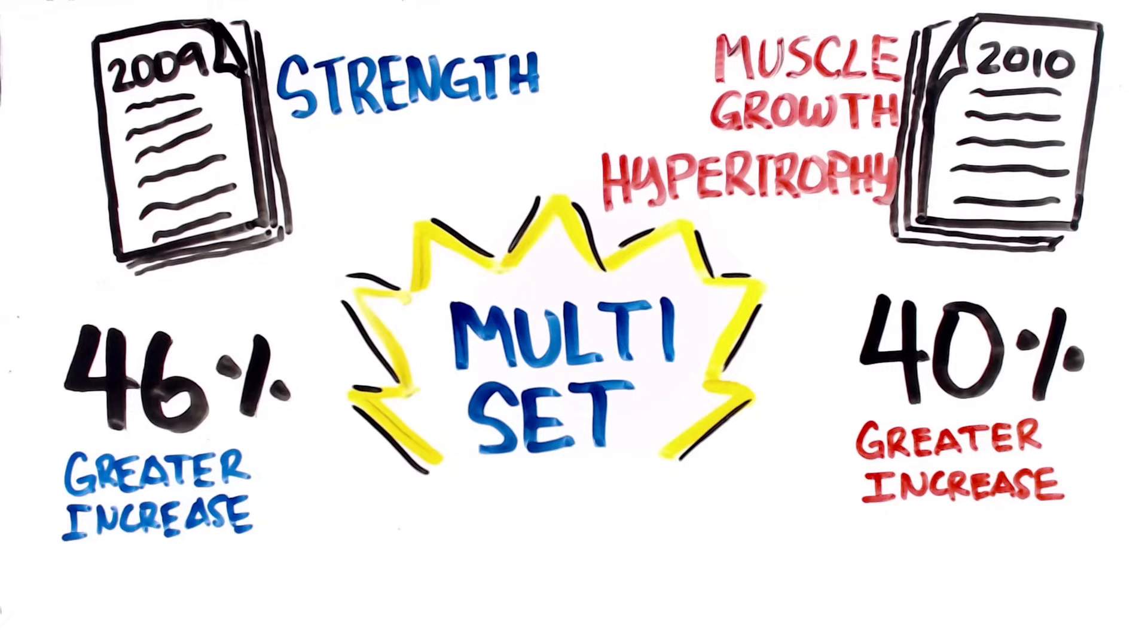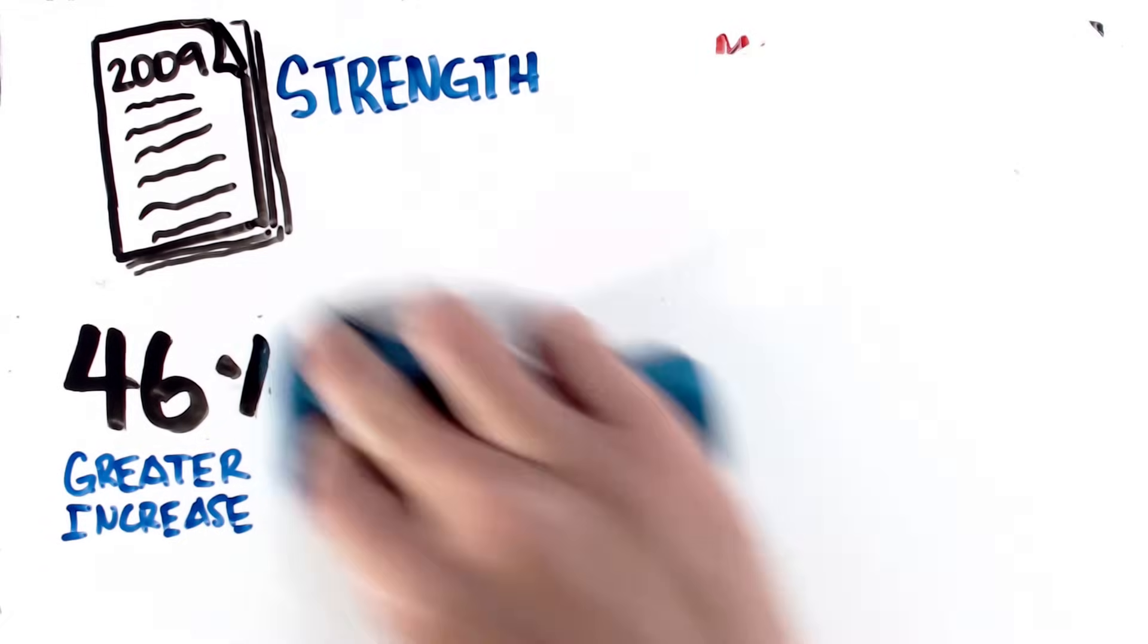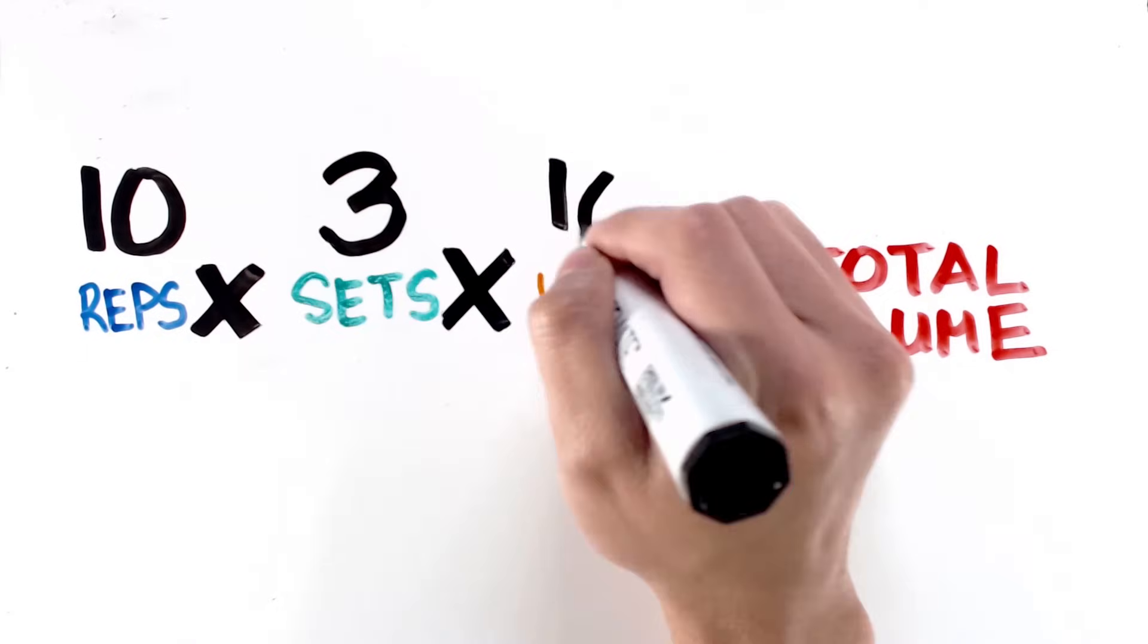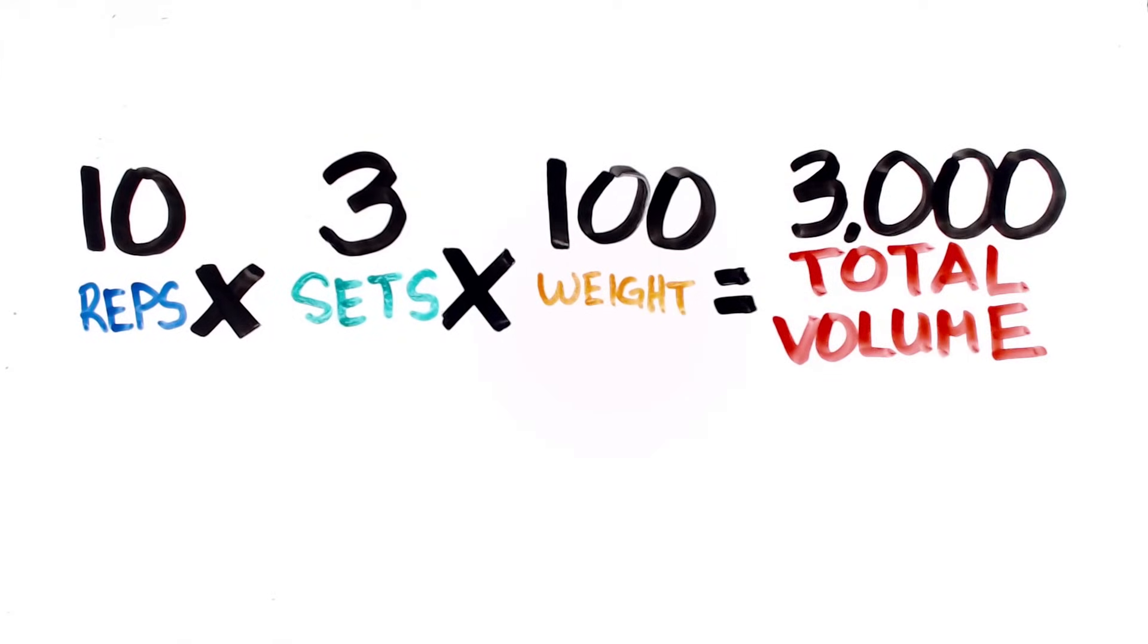But now the question is, how many sets? Perhaps what can shed some light is not exactly looking at reps and sets, but looking a little bit more broadly in terms of total volume. Total volume is a number generated by multiplying the amount of reps, sets, and weight you're moving. For example, performing 3 sets of 10 reps with 100 pounds equals to a total volume of 3000.